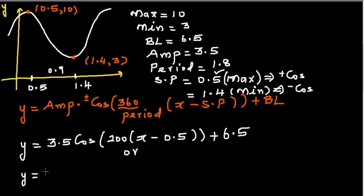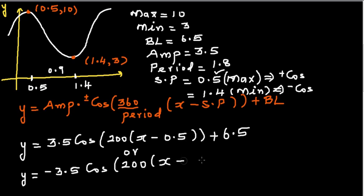Alternatively, starting at the minimum at x = 1.4, it's a negative cosine graph. The equation becomes: y = −3.5 cos(200(x − 1.4)) + 6.5. Both these equations represent the same graph.